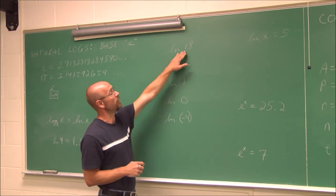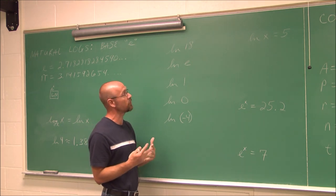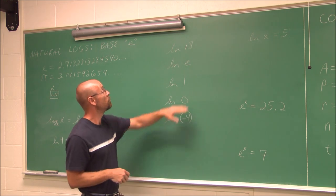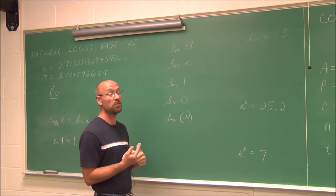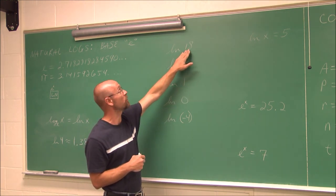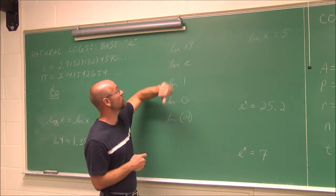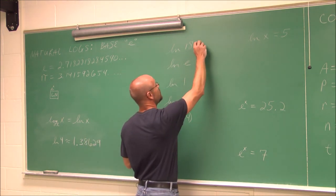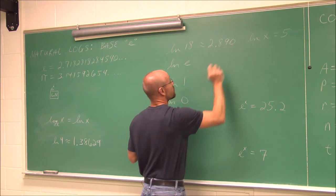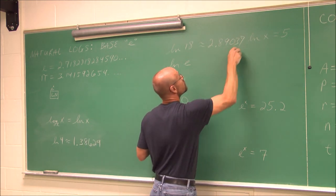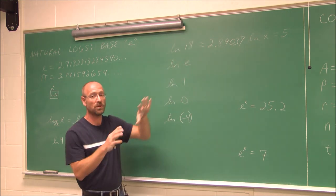The next example is ln of 18. Since e is close to 3, and 3 squared is 9 while 3 cubed is 27, the powers of 2 and 3 bracket 18, so the value should be somewhere between 2 and 3. Taking the natural log of 18 gives an approximate value of 2.89037. Type that into your calculator and verify you get that value.